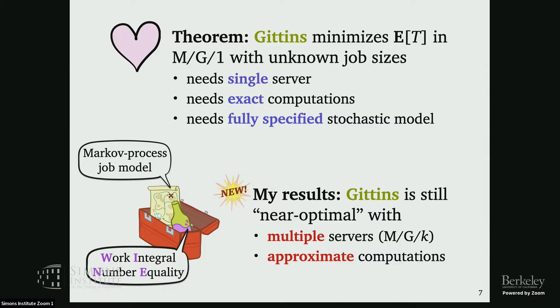The last theme I think is really important is thinking about this fully specified idea — there are lots of open questions here. For example, I said it's reasonable to assume we know the job size distribution. What if we've learned it from data and don't know the exact distribution? Do we need a distributionally robust version of Gittins? What does that even look like? I've started thinking about this problem, but it's very hard and I'm very interested to collaborate on these things. Anyway, thanks for your attention — happy to take questions.